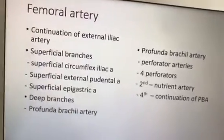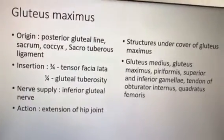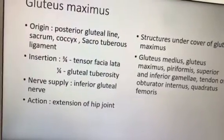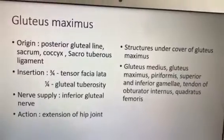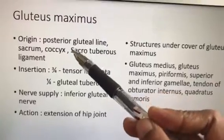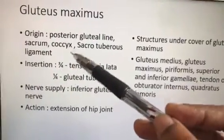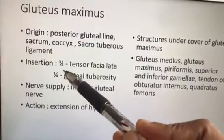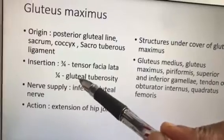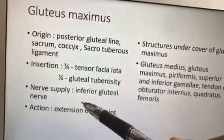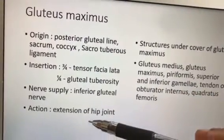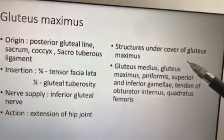Gluteus maximus origin is from the posterior gluteal line, sacrum, coccyx, and the sacrotuberous ligament — at minimum these should appear in your paper. For insertion: three-fourths is inserted into the iliotibial tract and one-fourth into the gluteal tuberosity. Although it is the maximus, it is supplied by the inferior gluteal nerve. Its action is extension of the hip joint.